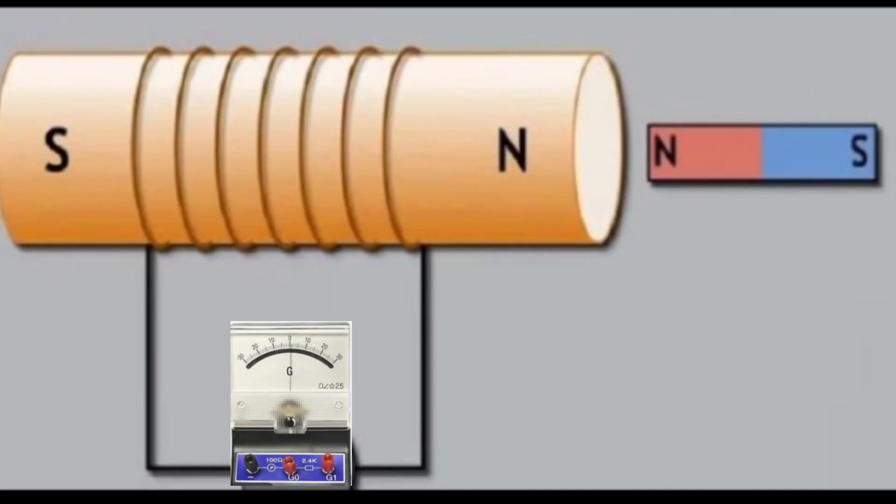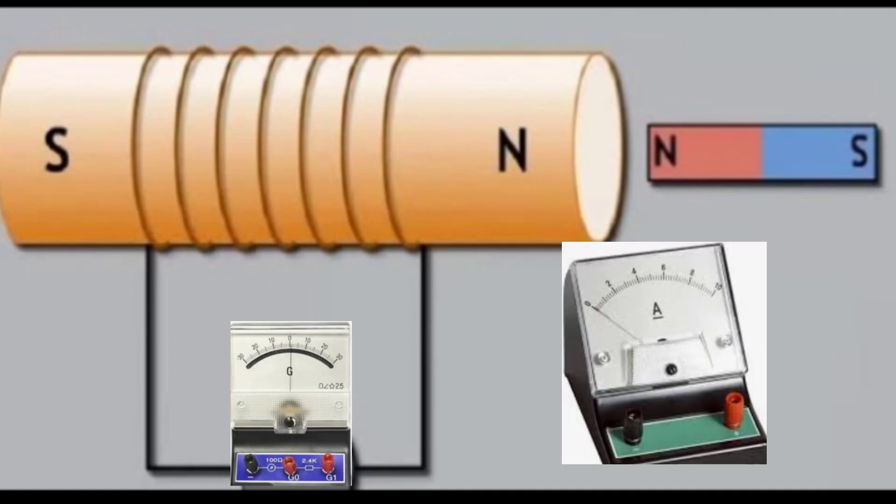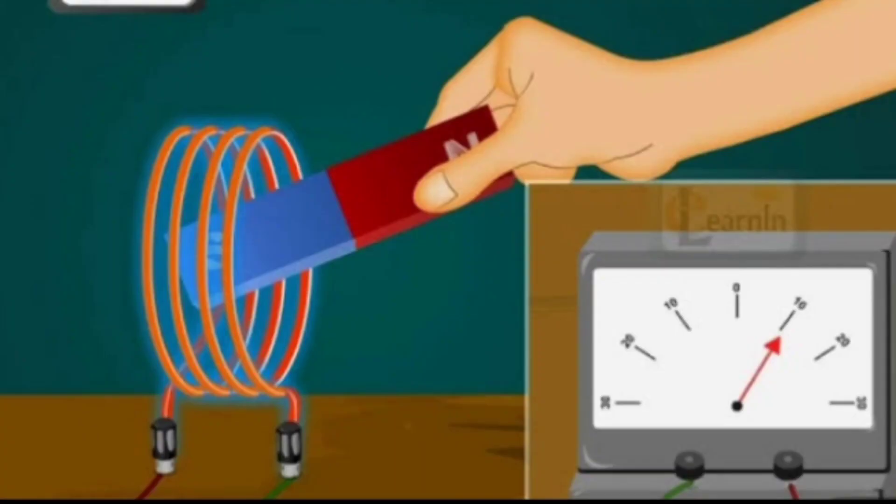This was the setup used by Michael Faraday - he used a galvanometer. We learned that a galvanometer can find the presence of current and the direction of current, and can detect how much current is flowing. He used a setup where a coil was connected to the galvanometer.